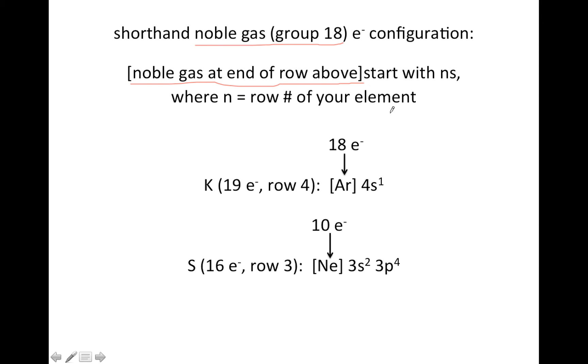And that's column 18, and you write down the symbol of the noble gas in brackets that's in the row above and all the way to the right. And then you would figure out how many electrons that noble gas has, and continue on after that with the ns level where n is the row number of your element.